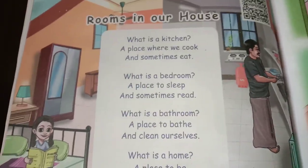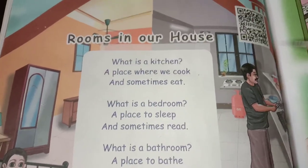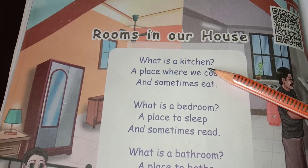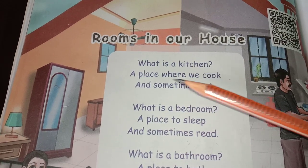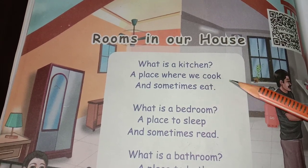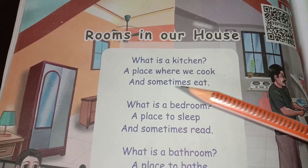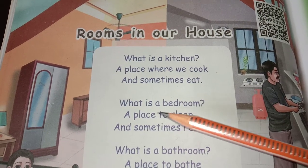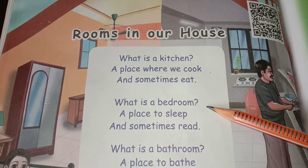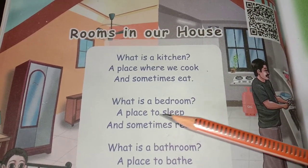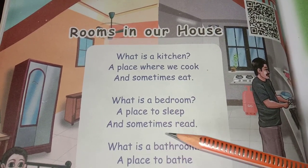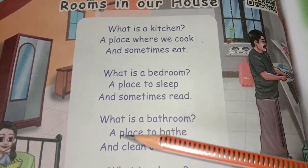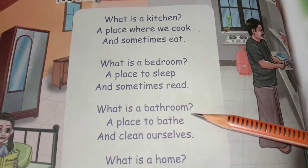So that is what we are going to see in this poem part. Let's see it. What is a kitchen — a place where we cook and sometimes eat. What is a bedroom — a place to sleep and sometimes read.